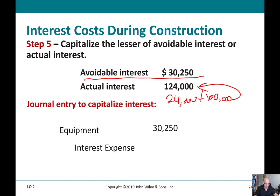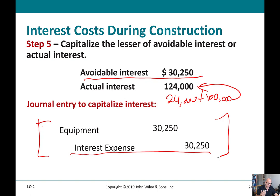The journal entry takes $30,250 out of interest expense and puts it into the equipment account, thus capitalizing it. This is more of an adjusting entry — you record all interest as interest expense as incurred, then by year end you adjust, moving the capitalized portion from interest expense to the equipment account.